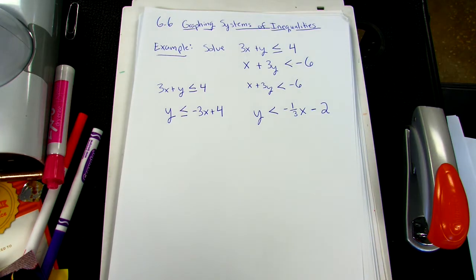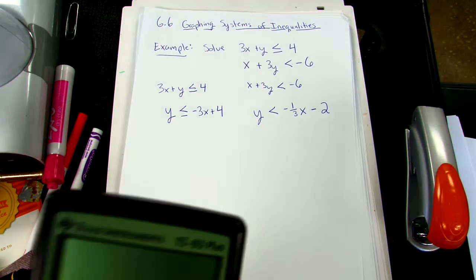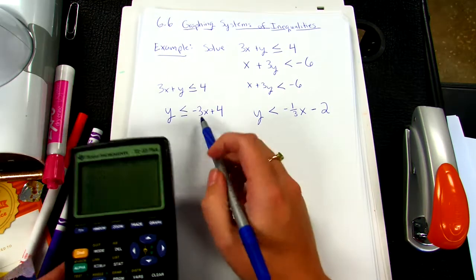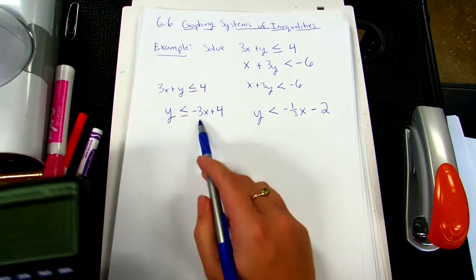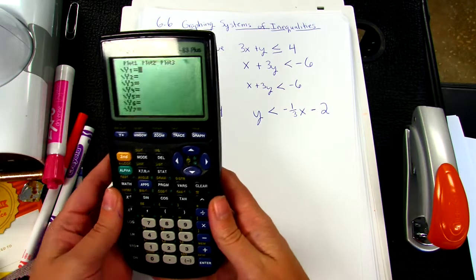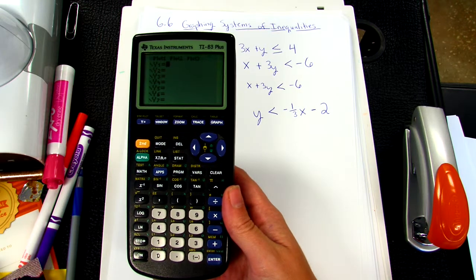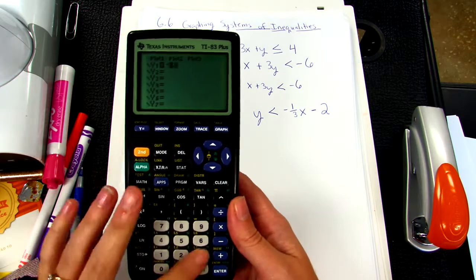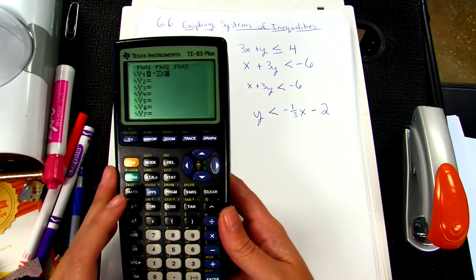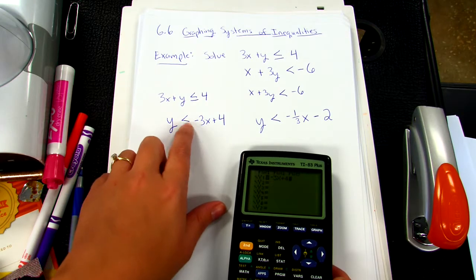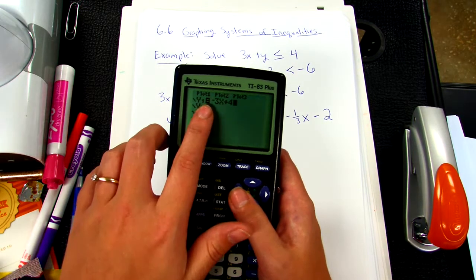Now that I've solved each for y, I get to use my calculator. I'll show you how to graph inequalities on your calculator. You're going to go to y-equals and plug in the equation. The first equation is negative 3x plus 4. So we enter negative 3x plus 4. Right now it says equal to.